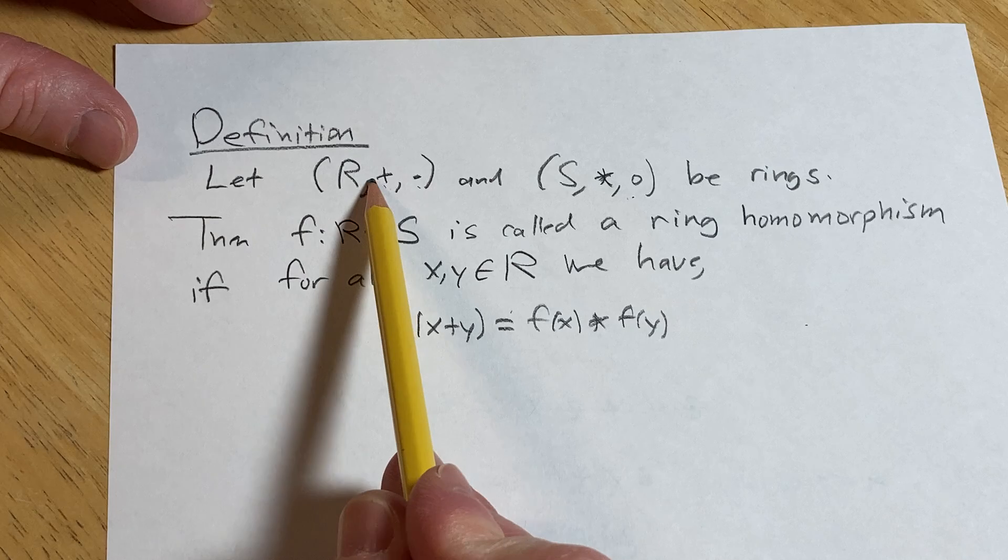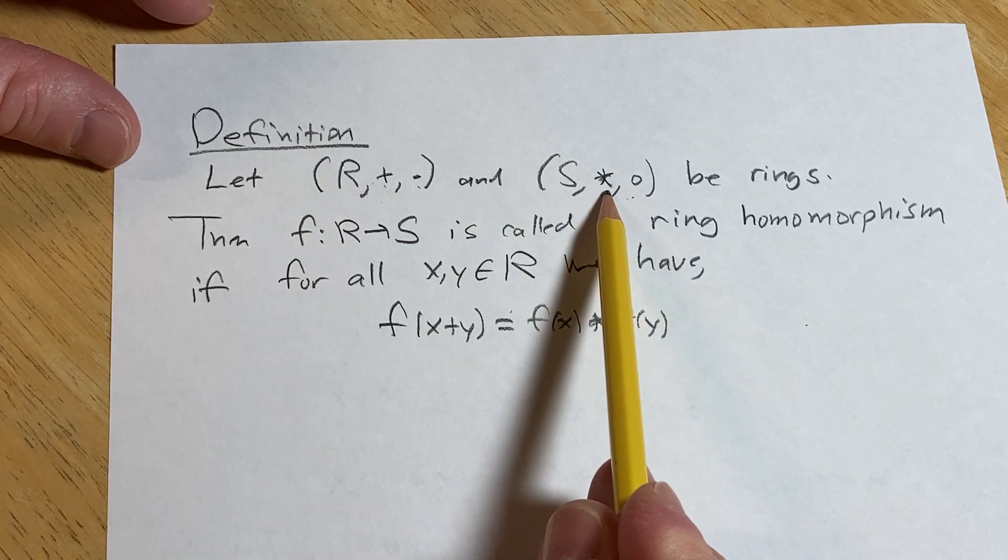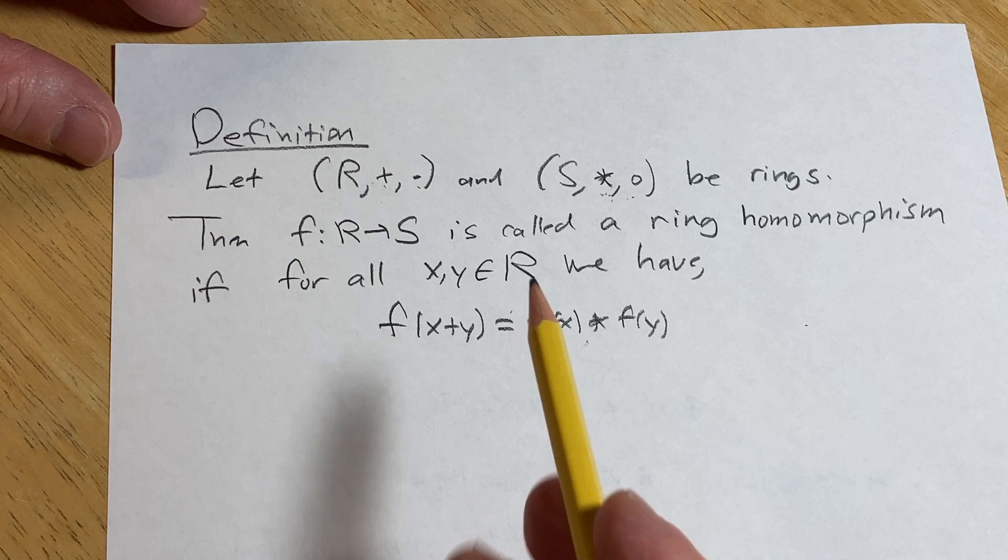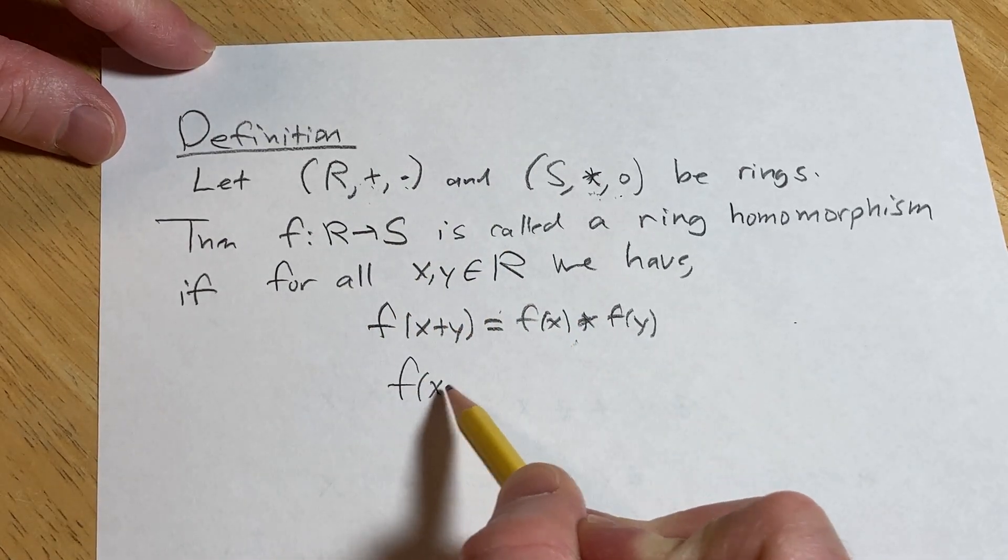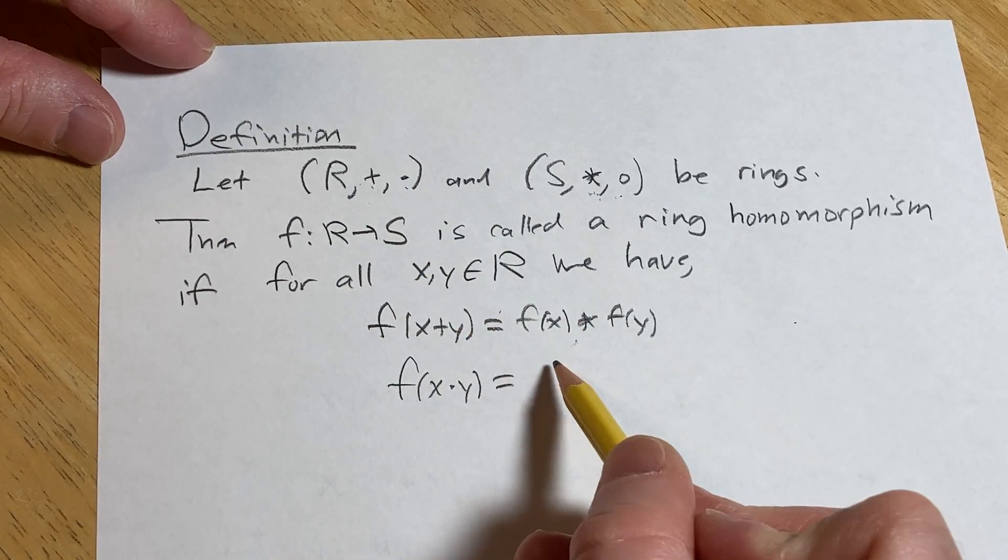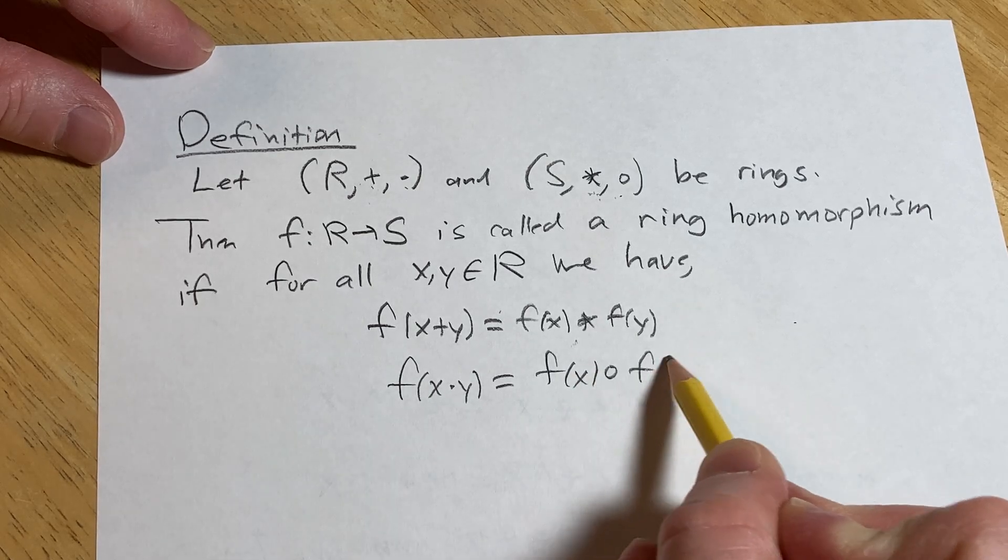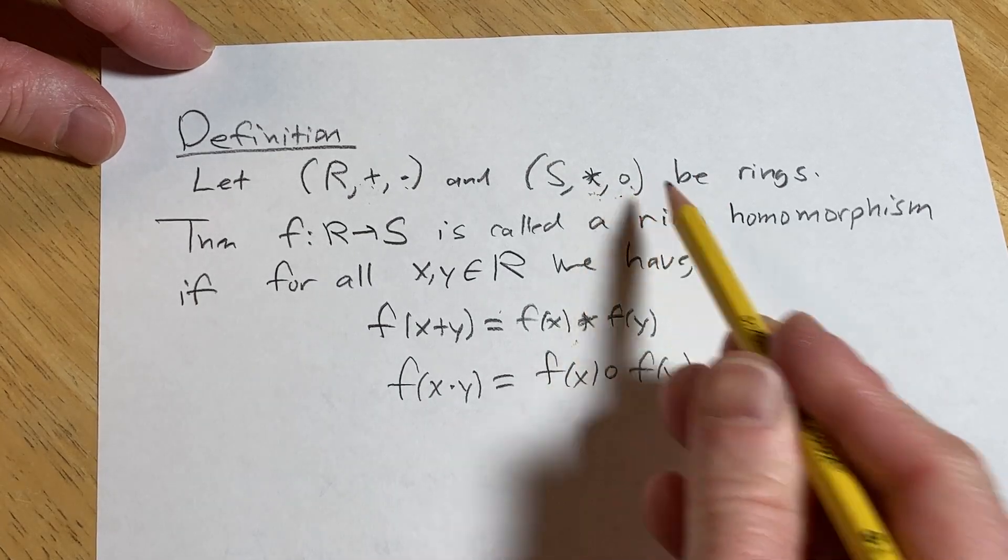So, the addition in R corresponds to the addition in S. Likewise, the multiplication in R should correspond to the multiplication in S, which is the circle. It's the circle.